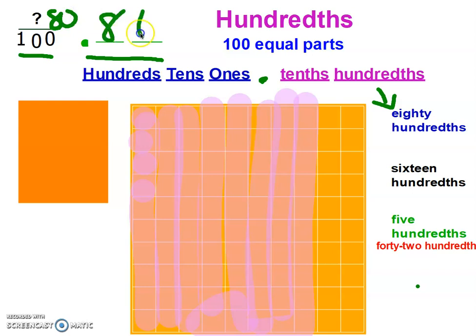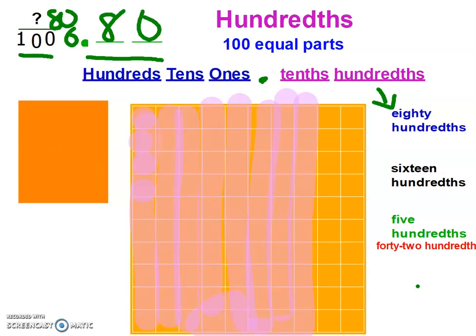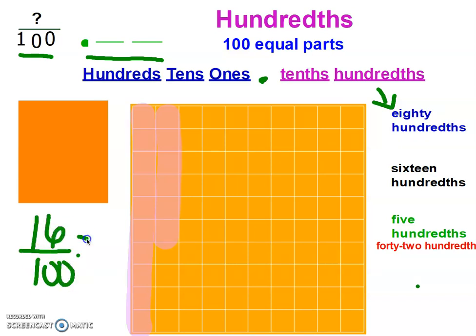You try this next one: sixteen hundredths. Did you draw sixteen hundredths as one rod and six units? To write it as a fraction: sixteen hundredths. To write it as a decimal: 0.16. You have two more — try both of those.